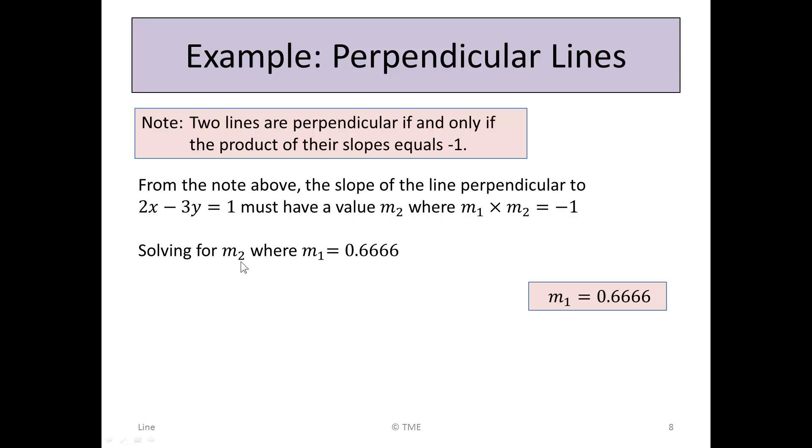Solving for the slope of the second line where m₁ = 0.666, we have m₁ × m₂ = -1 from the tables. Substituting, 0.6666 × m₂ = -1, so m₂ = -1/0.6666 = -1.5. The slope of the second line is -1.5.